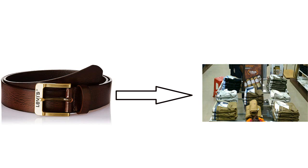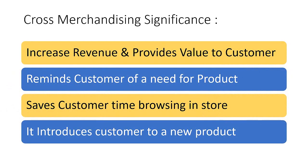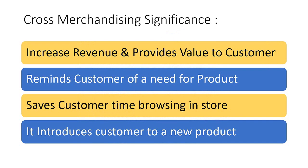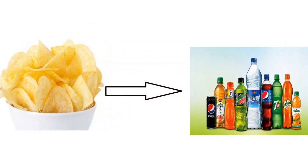Third, cross merchandising saves customers' time — retailers save the customer time walking through the whole store. For example, a retailer might display a complete grooming kit like face wash, moisturizer, talcum powder, and deodorant together, so a customer can pick the complete package. Fourth, cross merchandising helps introduce customers to new products by displaying them at unexpected or prominent places around the store, such as placing a newly launched wafer snack beside the beverage section.